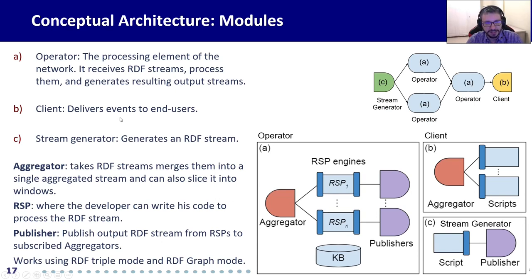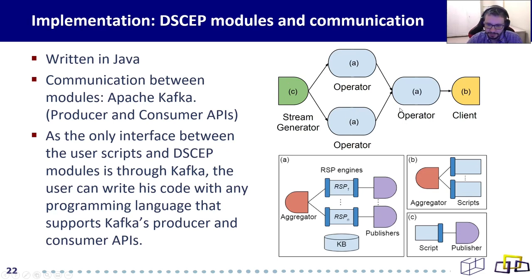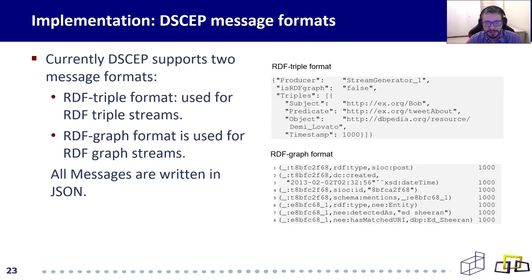It is important to say that in our conceptual architecture, we can represent events on the stream using RDF triples or RDF graphs. For the implementation, we coded in Java and used Apache Kafka for communication between all our modules. Every module uses a publish-and-subscribe pattern to communicate with each other. We implemented two forms of representing one event on the stream: using an RDF triples format and using an RDF graph.